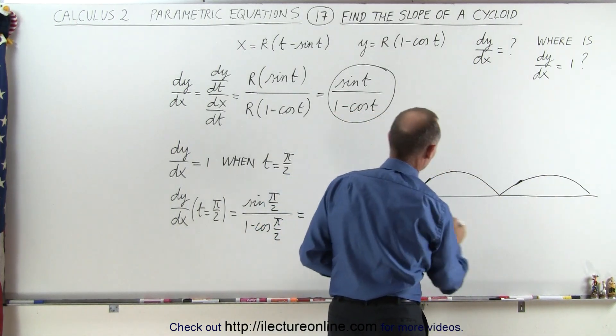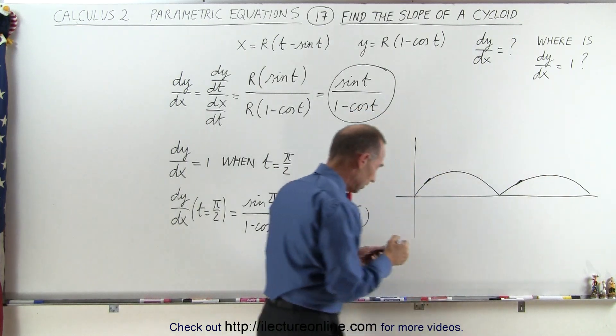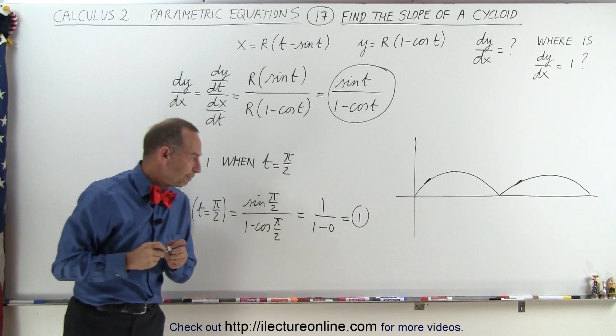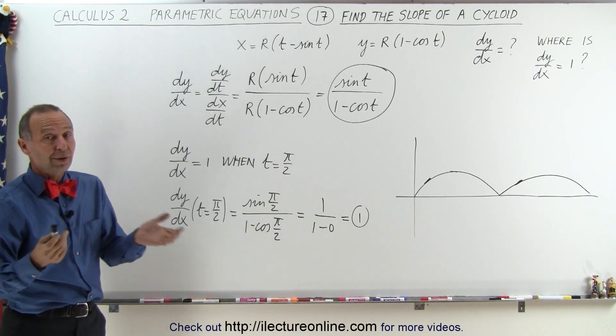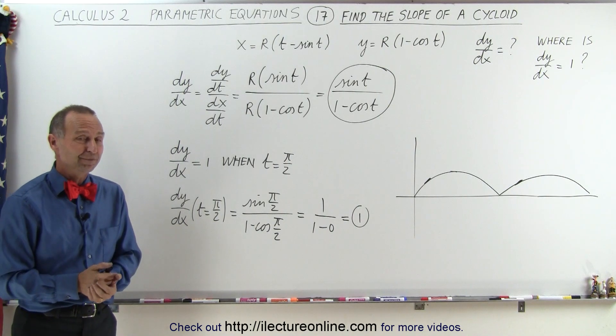So you can see that it only occurs once after we have pi over 2 and of course 2 pi plus pi over 2 and so forth, all the way down forever. And so that's how we find the derivative and specific values for the slope. That's how it's done.